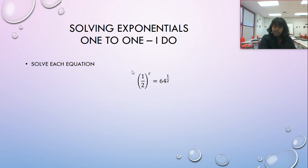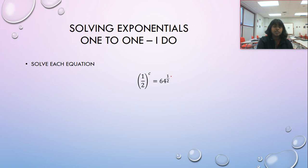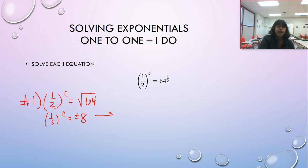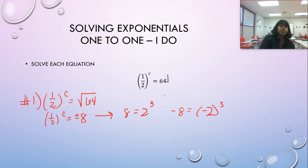Moving forward — a slightly different kind of question, but the same concept: you want both bases to be the same. First, deal with the one-half exponent on 64. 64 to the one-half is the square root of 64, which equals technically plus or minus 8. Then ask: what's the relationship between 2 and 8? 8 is equivalent to 2 cubed, and negative 8 is equivalent to negative 2 cubed. We'll confirm plus or minus at the end.